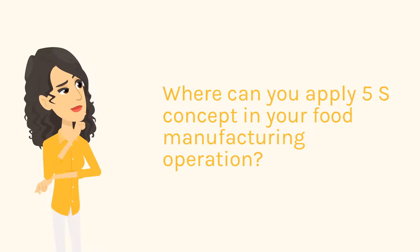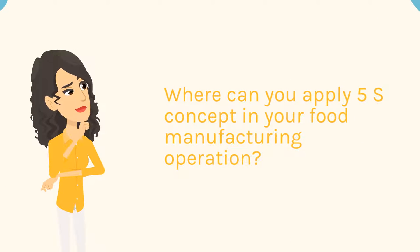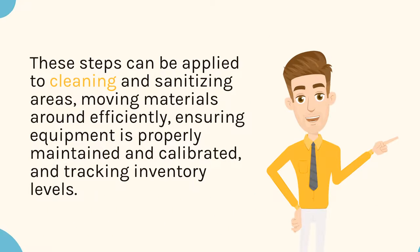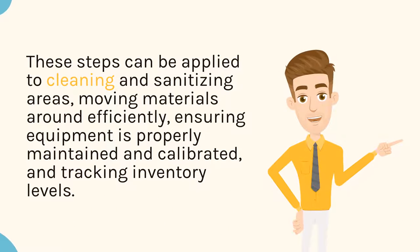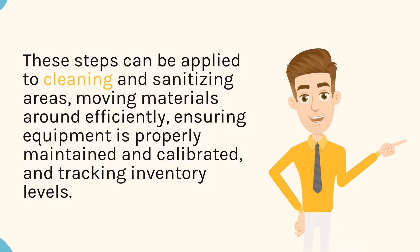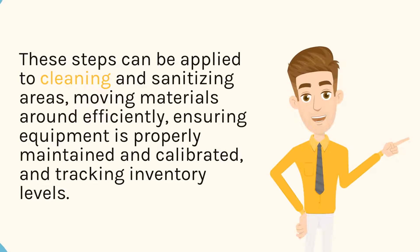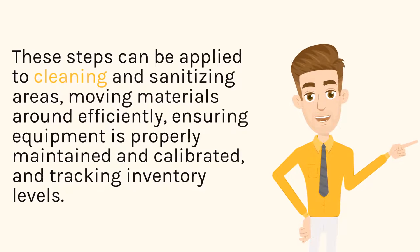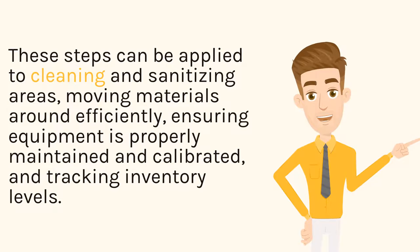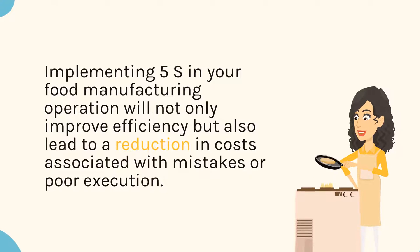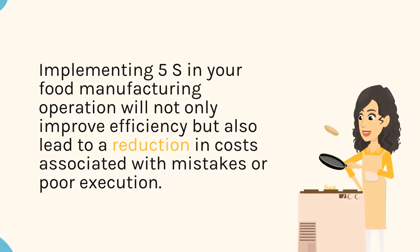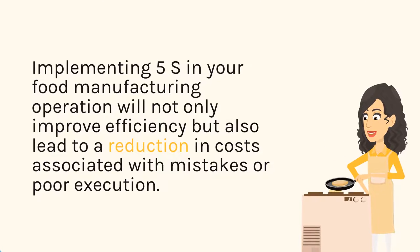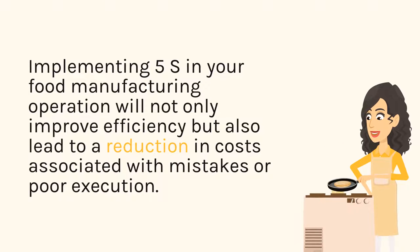Where can you apply the 5S concept in your food manufacturing operation? These steps can be applied to cleaning and sanitizing areas, moving materials around efficiently, ensuring equipment is properly maintained and calibrated, and tracking inventory levels. Implementing 5S in your food manufacturing operation will not only improve efficiency, but also lead to a reduction in costs associated with mistakes or poor execution.